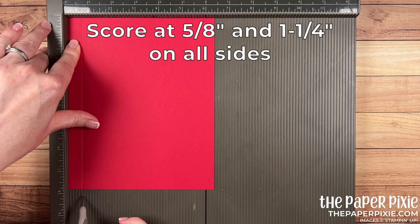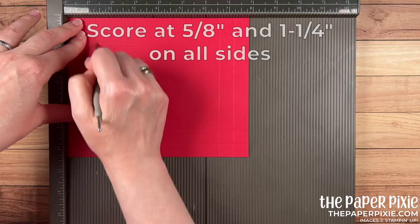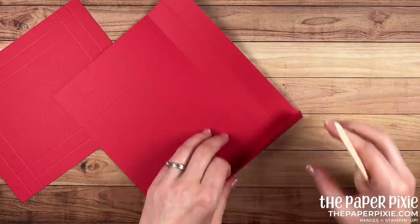So keep that in mind if you don't want to do the really detailed measurements. On this piece we're then just going to score this at 5/8 of an inch and 1 1/4 on all four sides. Next we're going to fold and burnish on all the score lines of both pieces.